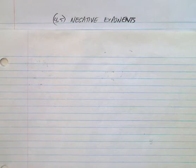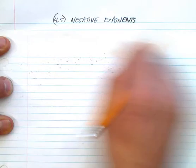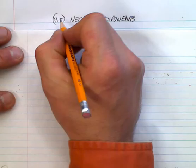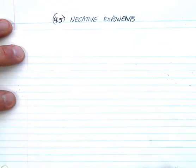So we've dealt with what they call rational exponents, which are fractions, and we've dealt with a bunch of exponent laws and a few other things as well, and changing from radicals to exponents and from exponents to radicals, and now we're dealing with these negative exponents.